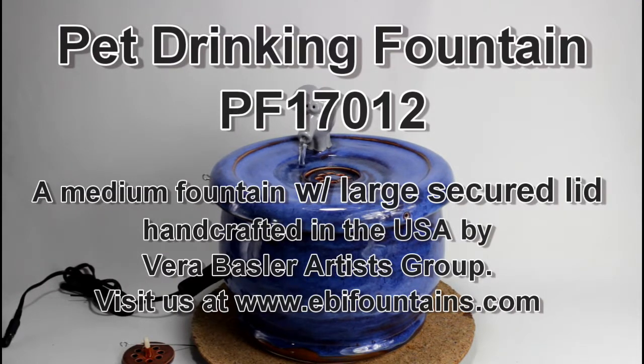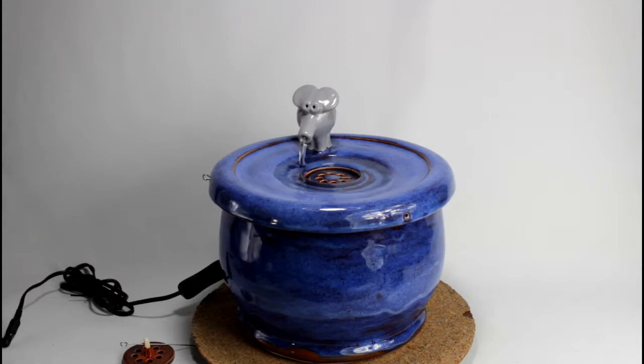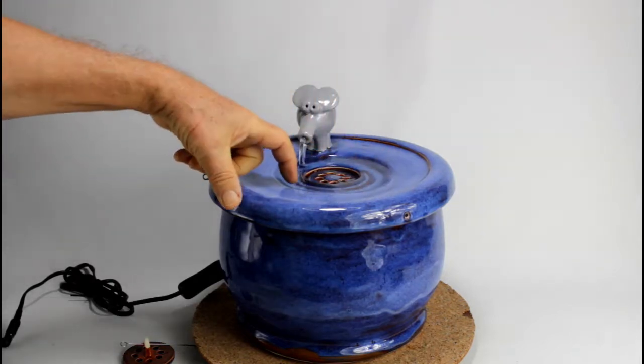Here we have Fountain 1712. It's a medium fountain with a large secured coon lid. A coon lid is a lid that has an inner watering and wider rim.